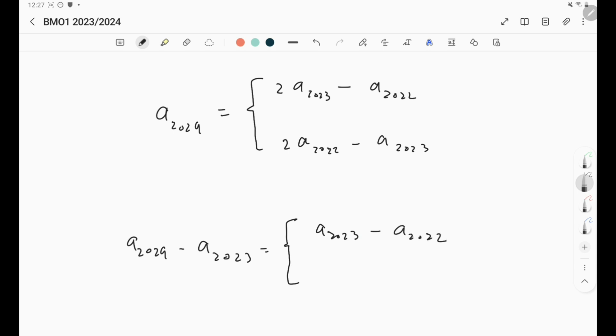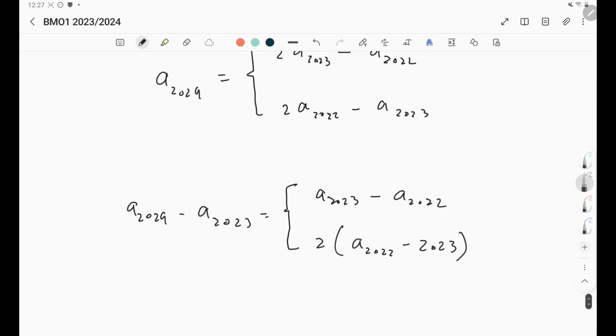Here we still have the two, but now we have another 2, so we can take this 2 as a common factor. Of course we know that this difference is either positive or negative one. Now looking at this, positive or negative one is either this expression or two times this thing.